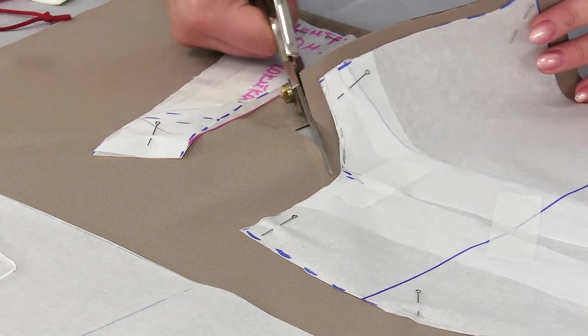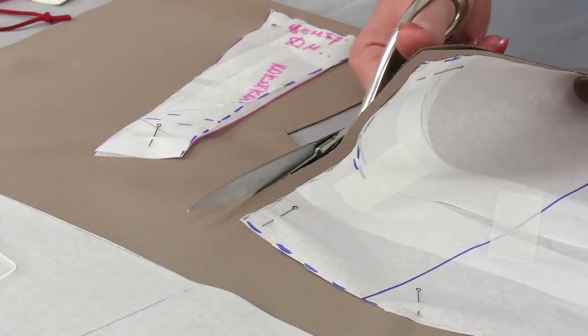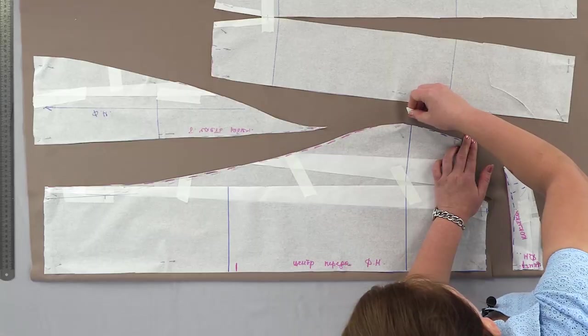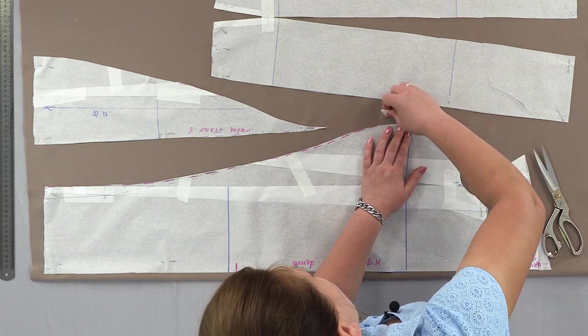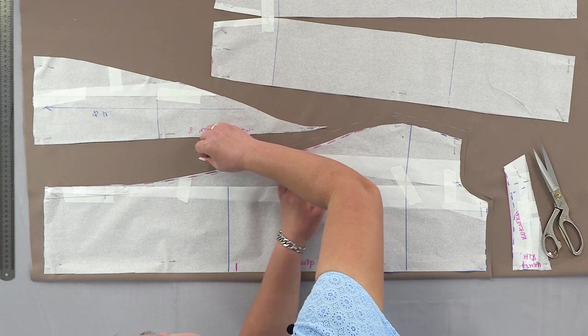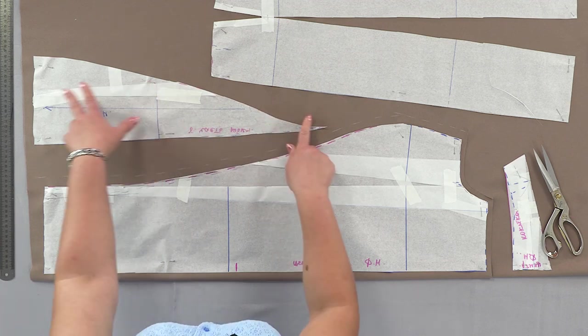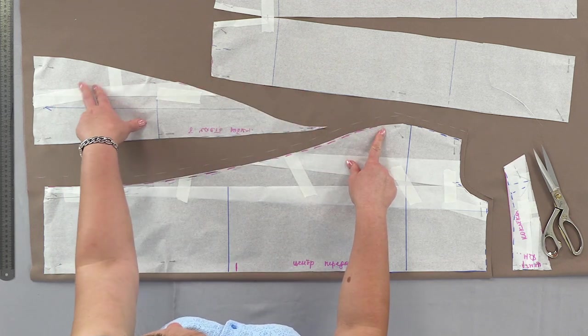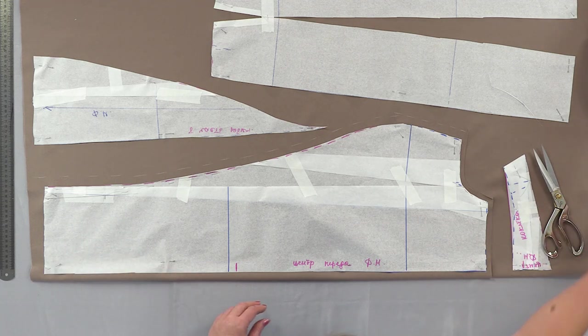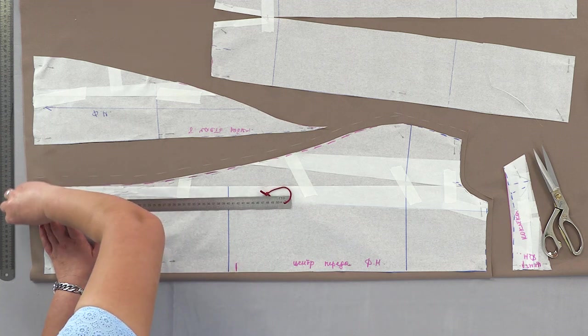We can have a 1.5 centimeter seam allowance on the side. And let's add the seam amount to the relief so we can easily make corrections and adjustments in case we don't like something. 3 centimeters on the lower part.